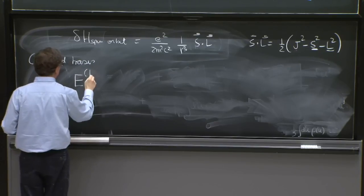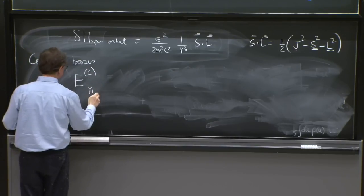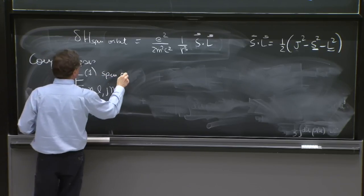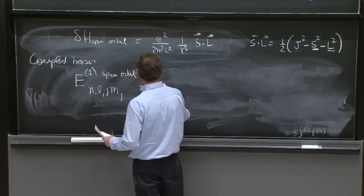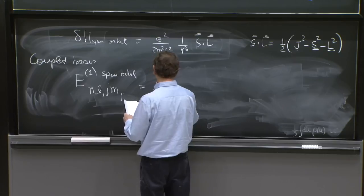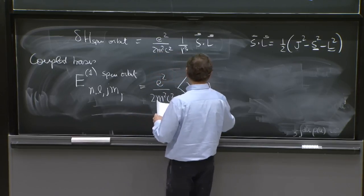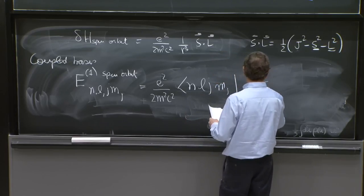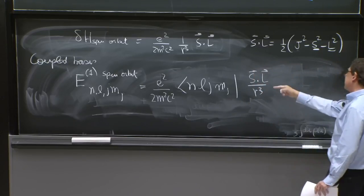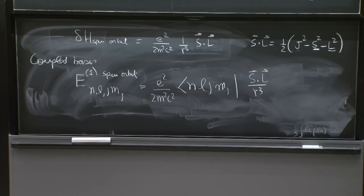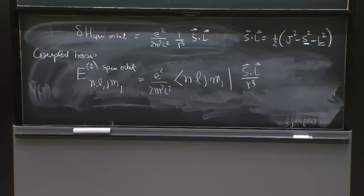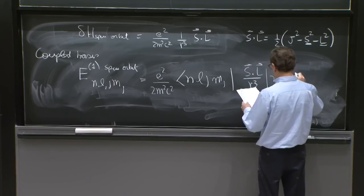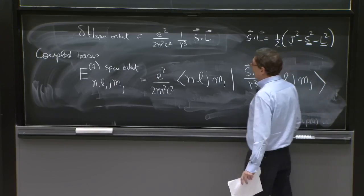And therefore, we can attempt to find E1 of n, l, j, mj. The r cubed has to stay inside the expectation value, because the expectation value includes integration over space. And again, the usual question.